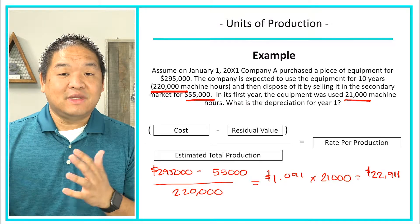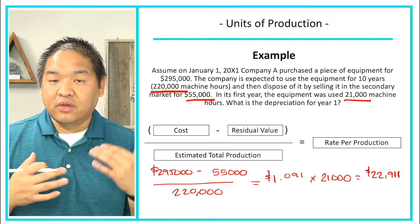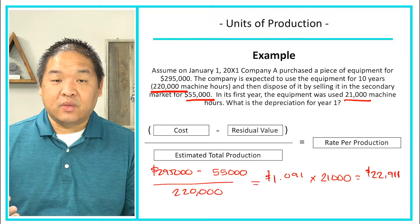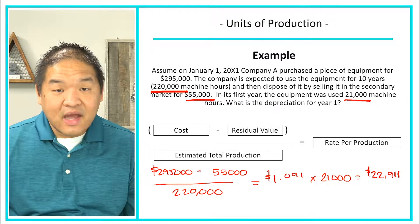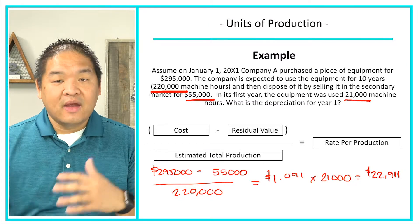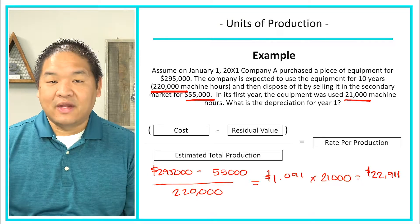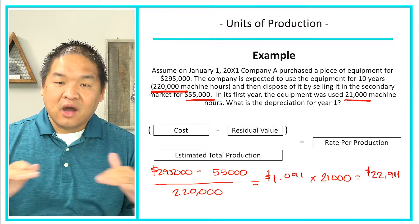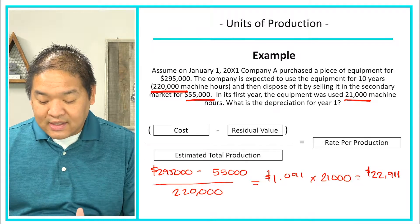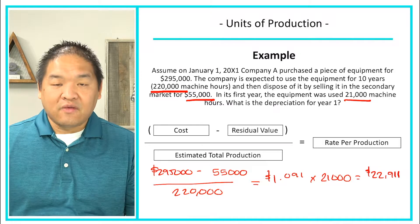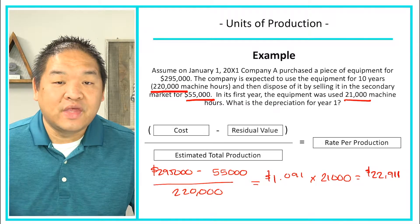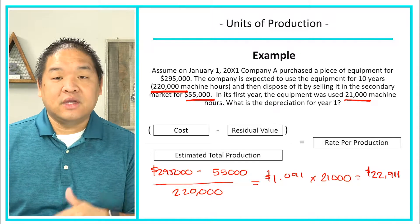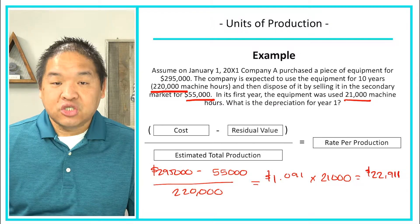In the second year, depreciation is dictated by how many machine hours we use. If we only use one machine hour, we depreciate just $1.09. If we use it for a hundred thousand hours, we multiply that by $1.09 and get $109,000. So depreciation will fluctuate based on usage rather than being a constant from year to year. Time as an overall factor is not incorporated — we don't know if we'll depreciate this for 10 years, five years, or three years. It depends on how much we use the machinery.